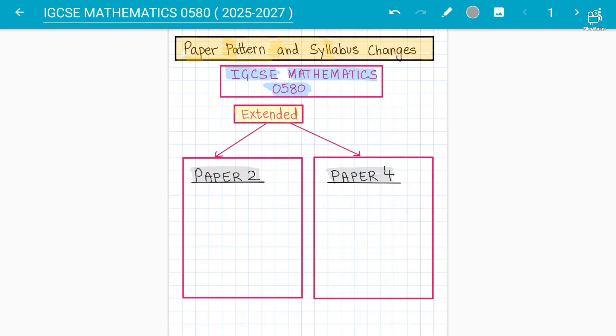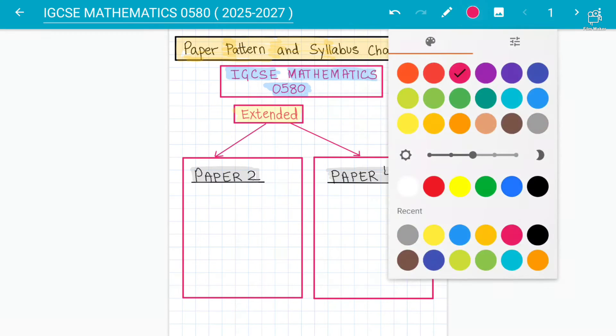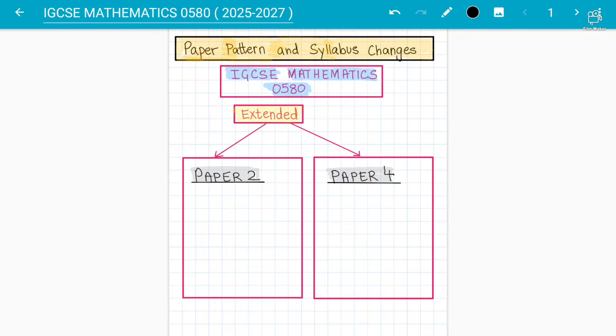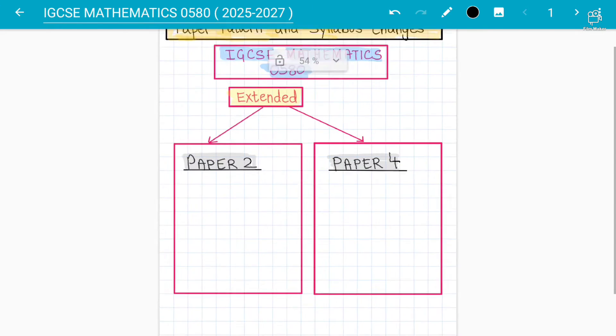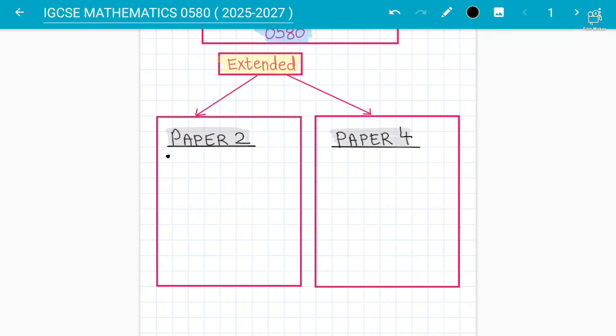The first important thing is the paper pattern. Students need to understand that now a lot of focus will be Paper 2 will now be a non-calculator paper. The main difference that we are facing is it's a non-calculator paper now. Paper 2 will be a non-calculator but in Paper 4 the calculator will be allowed.